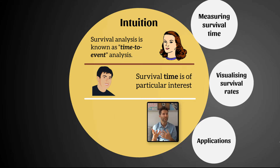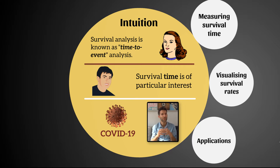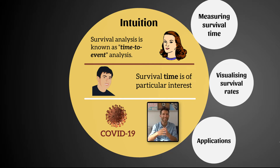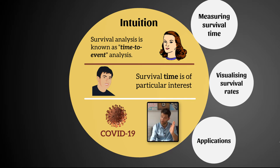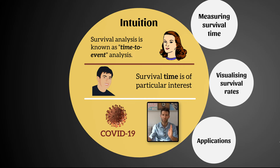You might wonder whether we can apply survival analysis to coronavirus. Not really — with coronavirus, we're not particularly interested in the time it takes someone to die or recover from initial infection; we just care whether they die or not. Survival analysis is better suited to conditions with a delayed onset, like cancer, dementia, or a hip fracture, where we are specifically interested in how long it takes for the event — in most cases, death — to occur.